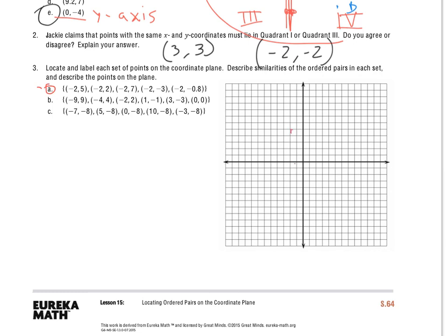So it's right about there. Negative 2, 2, right about there. Negative 2, 7. Negative 2, negative 3.